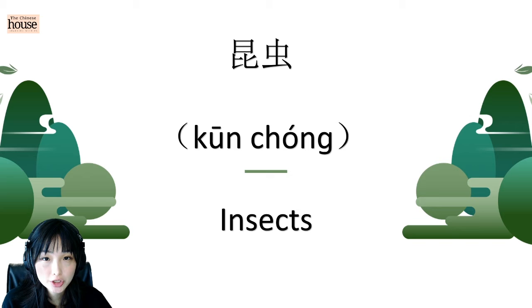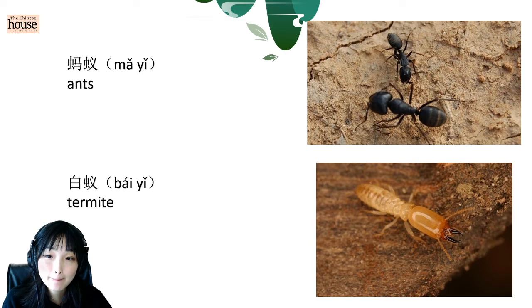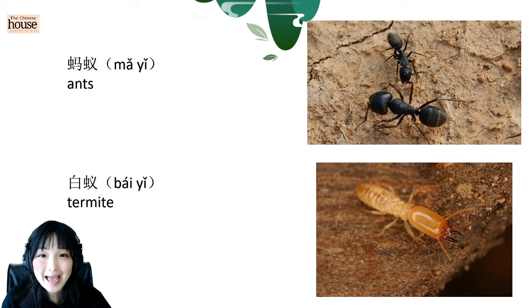And first, ants. 蚂蚁. Again, there's two tones and you should pronounce the first one and the second it. 蚂蚁. 蚂蚁. And termite, 白蚁. 白蚁. We call it in Chinese, it is white ant. 白蚁.